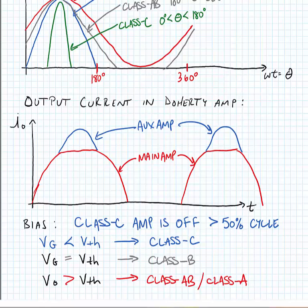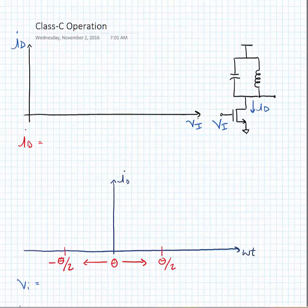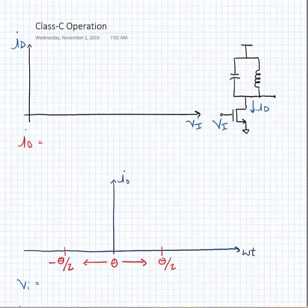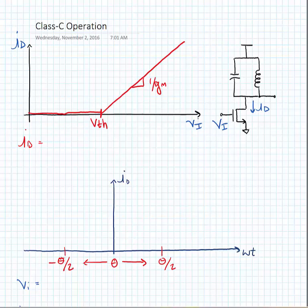Okay, so let's examine our Class-C operation. Basically what's going to happen is as our input voltage starts to increase up to the threshold voltage, there will be no current, and then once we reach the threshold voltage, the current will ramp linearly.